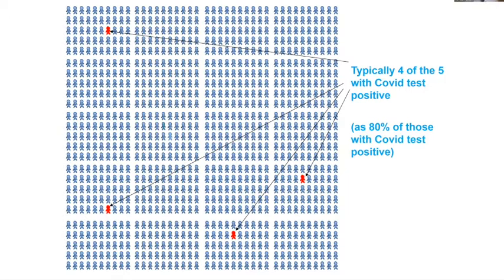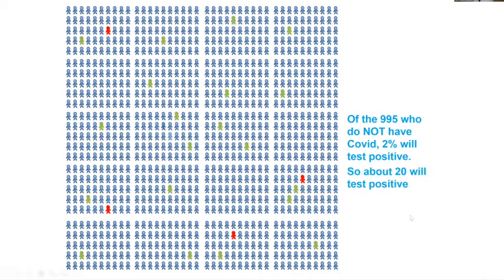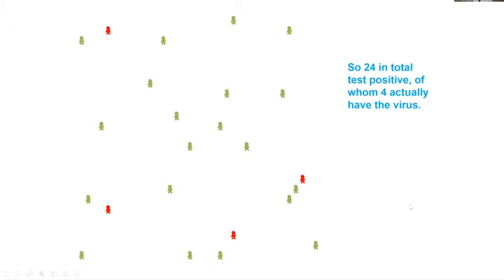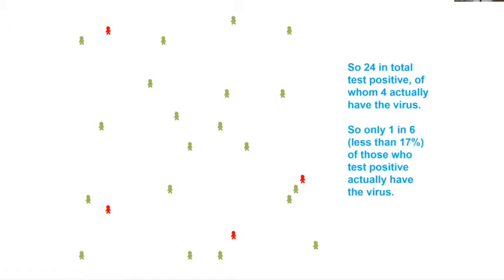Because there's a one-in-200 infection rate, about five of these 1,000 have the virus, while 995 don't. Because there's an 80% true positive rate, about four of the five who have the virus will test positive. But because of the 2% false positive rate, about 20 of the other 995 will also test positive. So we're left with about 24 testing positive, of whom only about four actually have the virus. That's about one in six — less than 17% of those who test positive actually have the virus. So Sarah testing positive means there's only about a one-in-six probability she has the virus. This was essentially a visual explanation of Bayes' theorem.